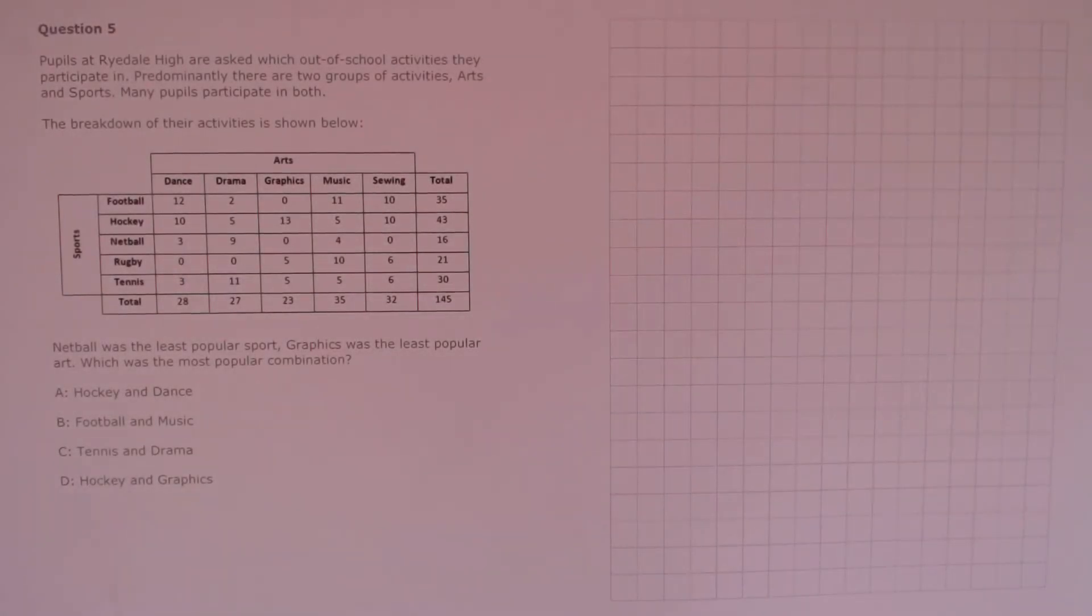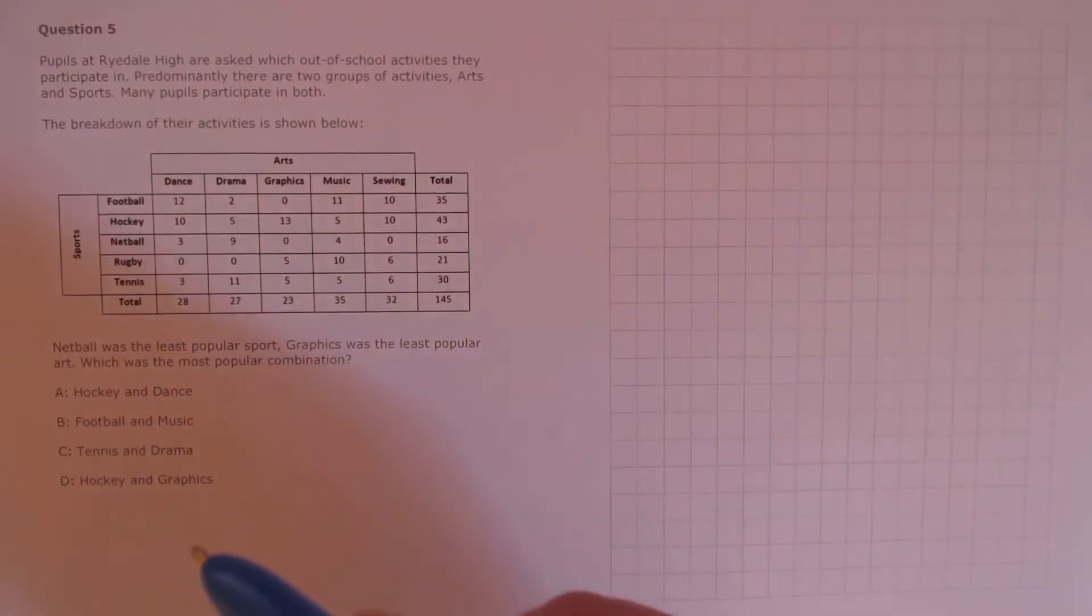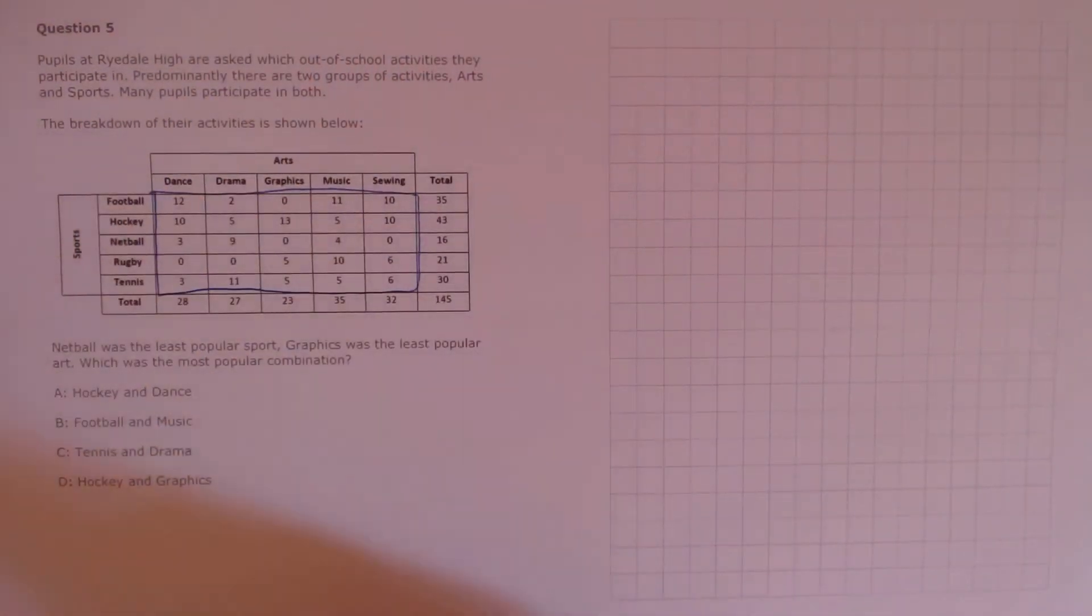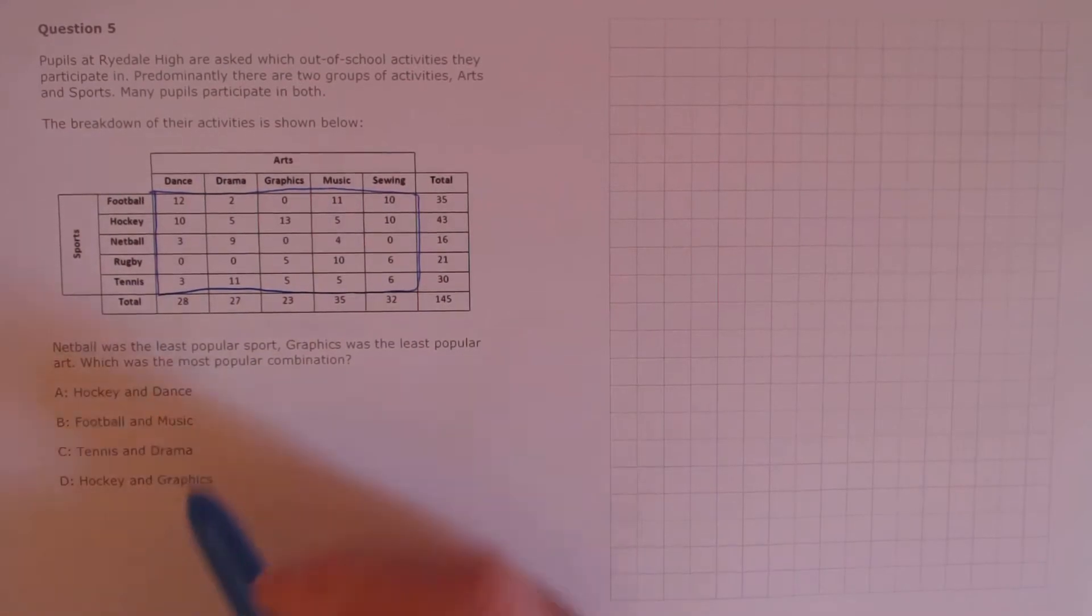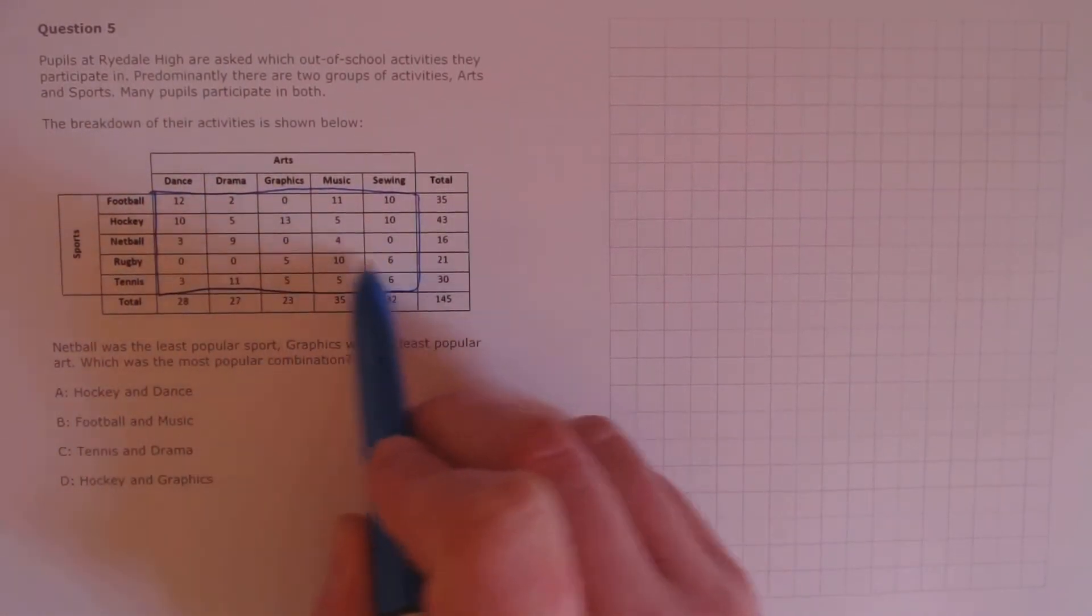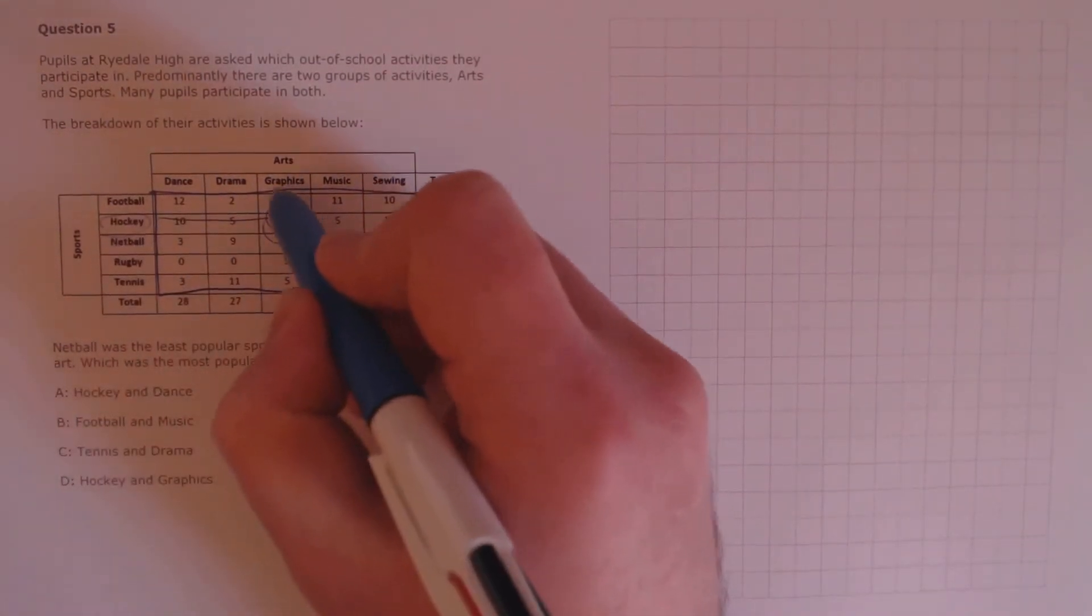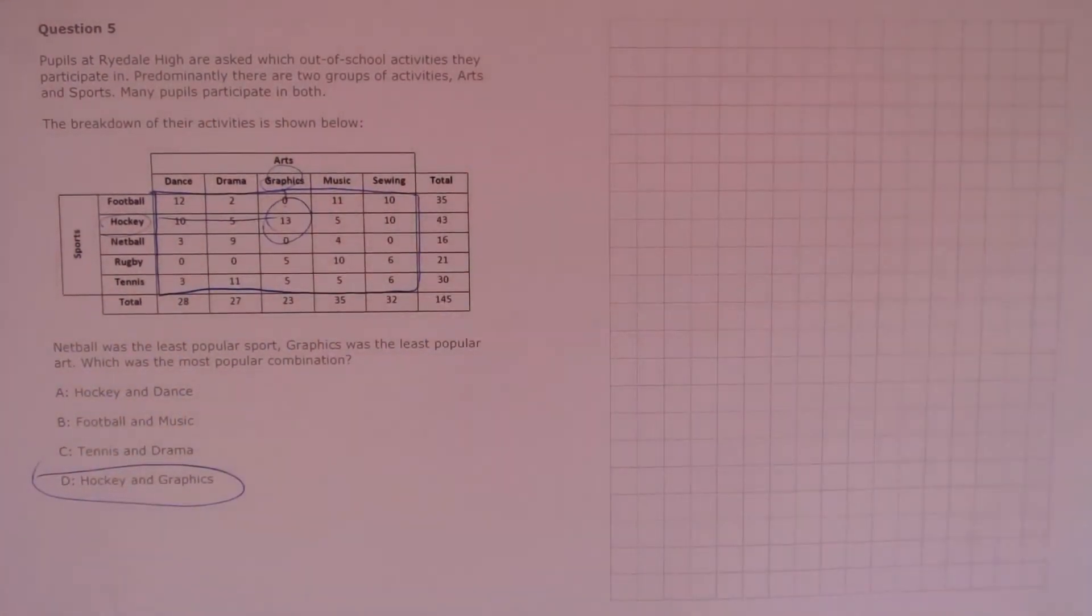Question 5. Pupils at Ryderdale High are asked which out of school activities they participate in. Predominantly there are two groups of activities, arts and sports. Many pupils participate in both. The breakdown of their activities is shown below. Netball was the least popular sport and graphics was the least popular art. Which is the most popular combination? We're looking for the highest number within this area of the grid, the overlaps, not the totals. So we just need to look through and figure out which is the highest occurrence, and that's here. 13 for hockey and graphics. And that's our answer. D, hockey and graphics.